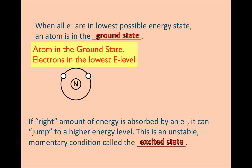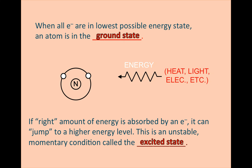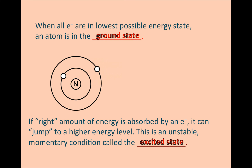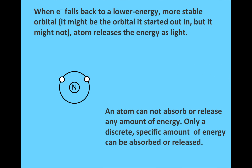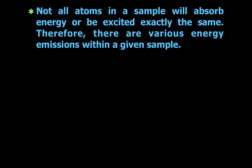Let's look at this diagram representing an atom in the ground state. When energy is absorbed by the atom — in the form of heat, light, or electricity — the electron jumps to a higher energy level and the atom is now in the excited state. When an electron falls back to a lower energy, more stable orbital, the atom releases the energy as light. An atom cannot absorb or release any amount of energy — only a discrete, specific amount can be absorbed or released. Not all atoms in a sample will absorb energy or be excited exactly the same, so there are various energy emissions within a given sample.